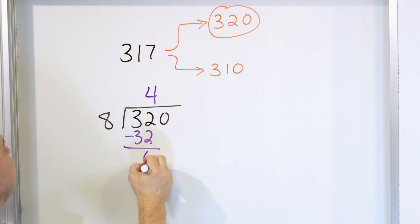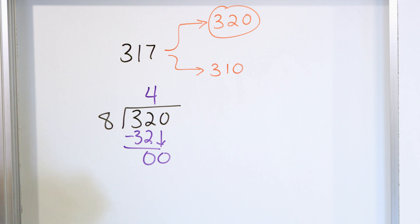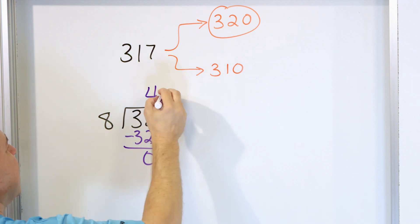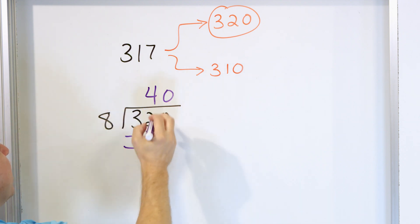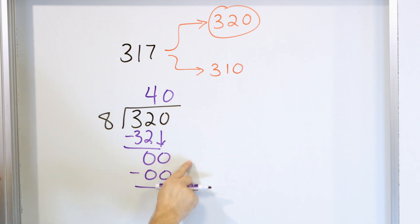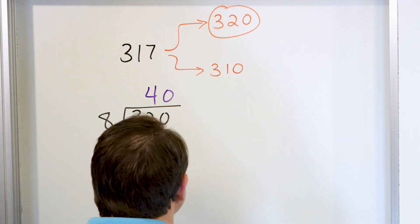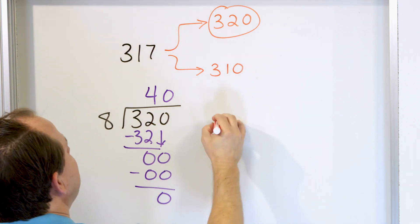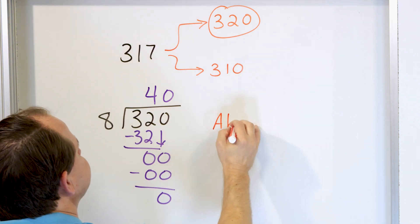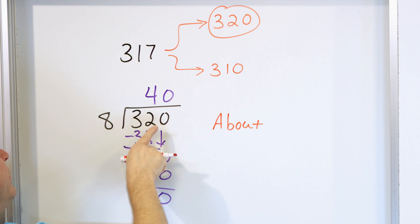Subtract, get a zero, and drag the next zero down. Then eight times what is zero? The only thing that works is zero. Multiply, get a zero, subtract, get a remainder of zero. No more digits. So what we have learned is that it's about 40 — that's the answer we got.